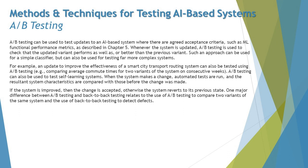One major difference between A/B testing and back-to-back testing is that A/B testing compares two variants of the same system, whereas back-to-back testing is used to detect defects. A/B testing can also be combined with other techniques in a blended approach to bring the best output. That covers everything about A/B testing.